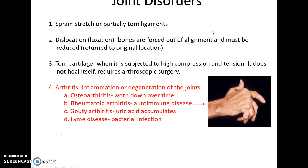Joint disorders include sprains — when a ligament is stretched or slightly torn but should heal on its own. A dislocation or luxation is when bones are forced out of alignment and have to be put back into position, called being reduced. Torn cartilage or severely torn ligaments and tendons require arthroscopic surgery because they will not heal on their own. Arthritis involves inflammation and degeneration of joints. Osteoarthritis is where joints just wear down over time — everybody will get it someday. Rheumatoid arthritis is an autoimmune disease attacking synovial joints — very painful, can cause swelling that knocks bones out of position, and those joints can even ossify. Gouty arthritis is where uric acid accumulates in certain joints such as the great toe. Lyme disease is a bacterial infection causing injury and pain in the joints.